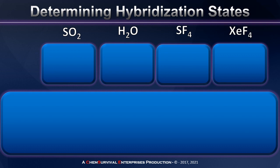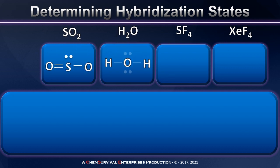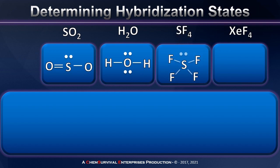Now let's take a look at a few more compounds likely to appear in your general chemistry course: sulfur dioxide, water, sulfur tetrafluoride, and xenon tetrafluoride. Just as before, I'll draw their Lewis structures, paying particular attention to the electronic structure about the central atom. When I do so, I discover that all four of these compounds contain not only sigma bonds, but also lone pairs, which will be very important in determining the hybridization state of the central atom.